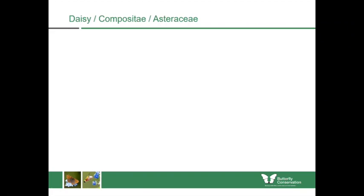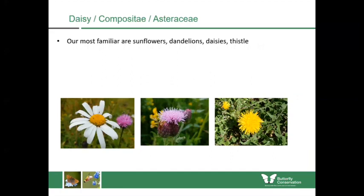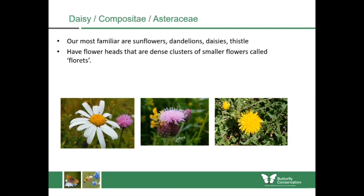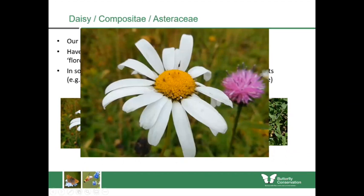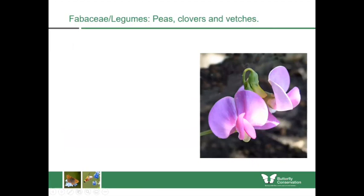The daisy family is also known as the composite or Asteraceae, and includes sunflowers, dandelions and thistles — a really diverse family. What they all have in common is flower heads which are dense clusters of smaller flowers called florets packed onto these heads. In some cases the outer florets look different to the inner florets. Looking at the oxeye daisy you can see all those little florets packed with nectar, plus the outer florets which are modified forms.